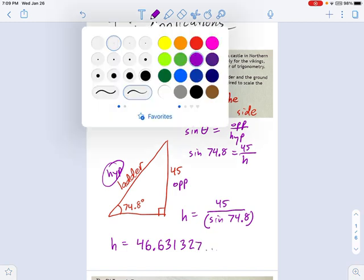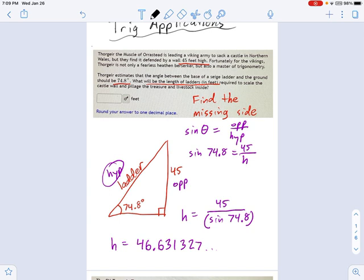That's how many feet long the ladder has to be. The problem wants it in one decimal place. You could put in this whole long decimal if you want, or you could round it. 46.6. That should do it.